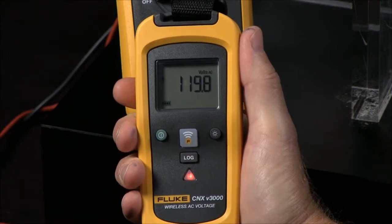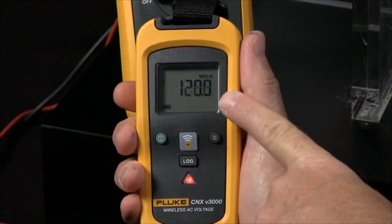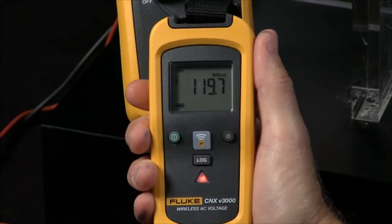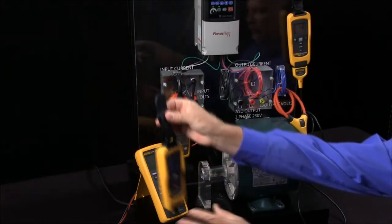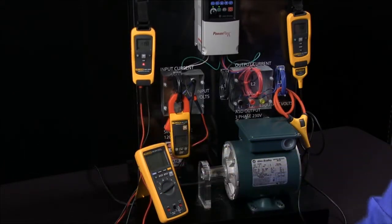A nice feature of these modules, as you can see, is they can be used as a standalone meter. We can actually read what the value is. And then we press the wireless button, so now they're starting to broadcast wirelessly, and they even work with our magnetic straps for you to be able to hang them.